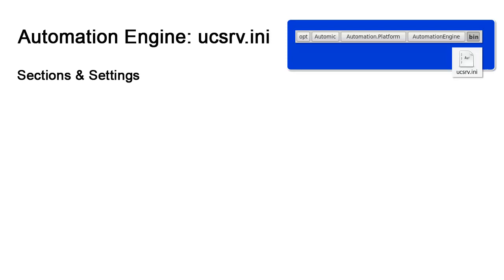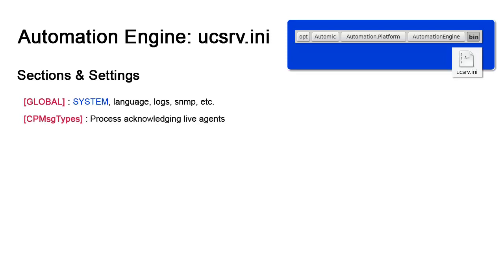We start with UCSRV.ini, the Automation Engine's configuration file. It contains by far the largest number of sections because this is where many of the instance properties are set. Many of the settings for Atomic Automation are defined here initially, with the other components having to follow suit. As for most components, we have a global section. More specifically, we find the system setting for the instance. Agent files also have this setting and they should match. Global also contains settings for the language in the files, the log file definitions and counts, SNMP definition, exception handling, and the behavior of the clients when the AA application starts. CP-MSG types sets the process, either CP or primary WP,